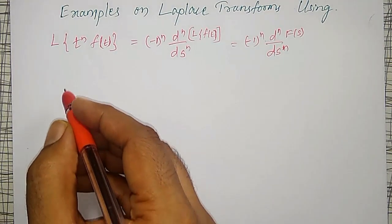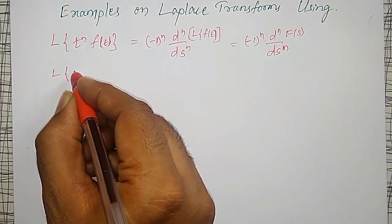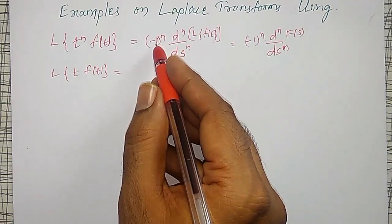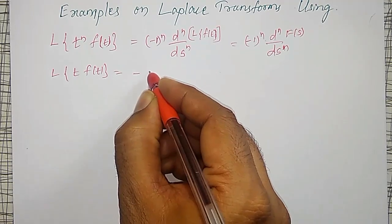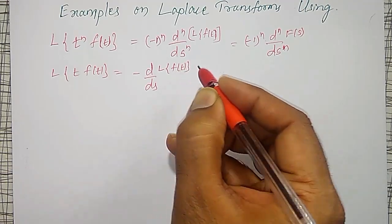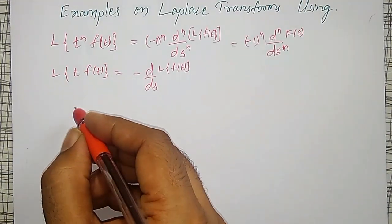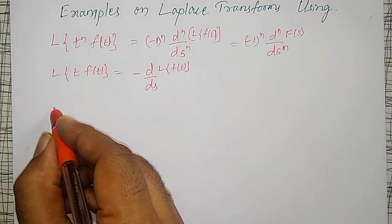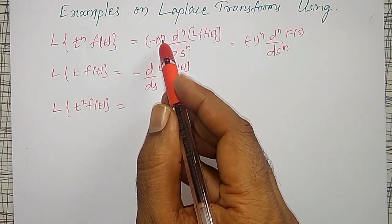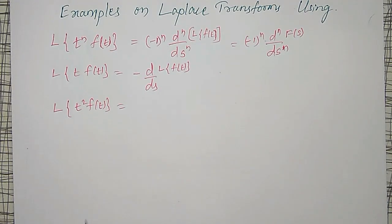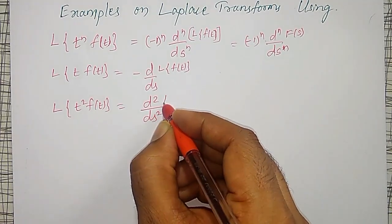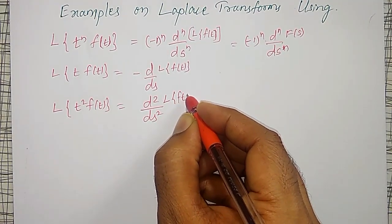In particular, if n is equal to 1, then the Laplace transform of t into f of t equals minus 1 times the first derivative with respect to s of the Laplace transform of f of t. And if n equals 2, the Laplace transform of t squared into f of t becomes minus 1 squared, which is plus 1, times the second derivative with respect to s squared of the Laplace transform of f of t.